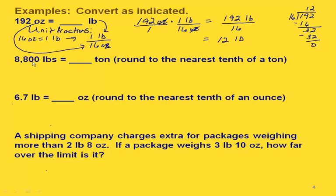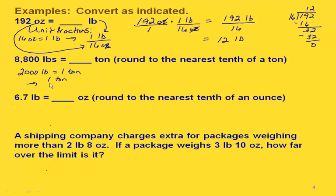Now let's convert from 8,800 pounds to tons, rounding to the nearest tenth of a ton if needed. For our unit fraction, we use the conversion that 2,000 pounds is equal to one ton. We want pounds on the bottom since it's our original unit, and tons on the top since that's what we're converting to. So the unit fraction is one ton over 2,000 pounds.